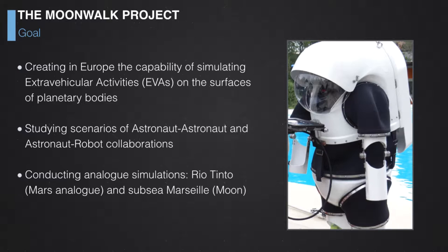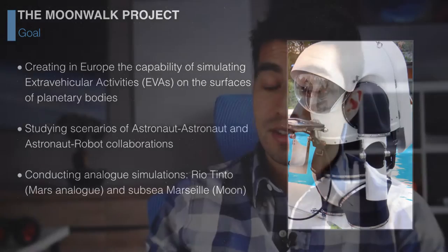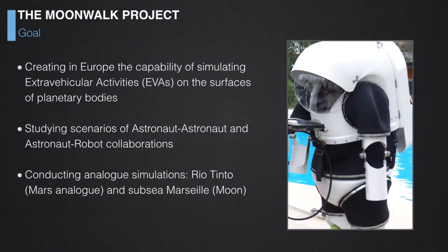The MoonWalk project is a three-year cooperative research and development project funded by the European Commission under the space theme of the 7th Framework Program. The goal is creating in Europe the capability of simulating EVAs on the surface of planetary bodies — the Moon, Mars, or other bodies — as well as studying scenarios of astronaut-astronaut and astronaut-robot collaborations. Analog simulations will be conducted that try to be as close as possible to the real thing.